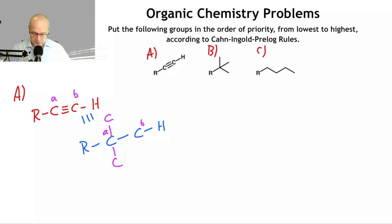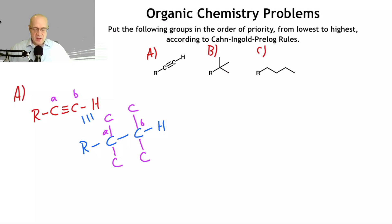The same applies to carbon B. Carbon B is bonded to one hydrogen and to carbon three times. So you set it up the same way — carbon, carbon, carbon. That's how Cahn-Ingold and Prelog say to examine a multiple bond. It's not as hard as you think.